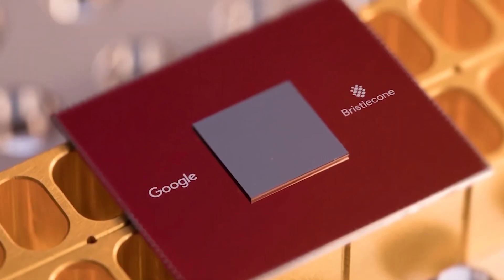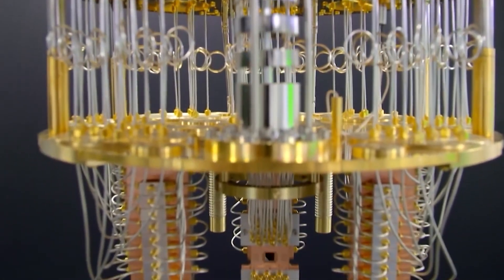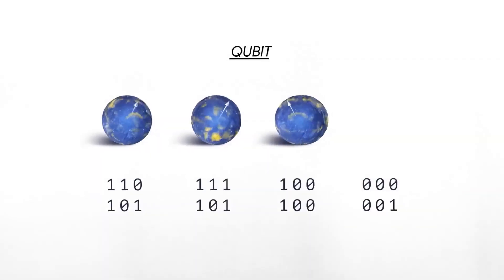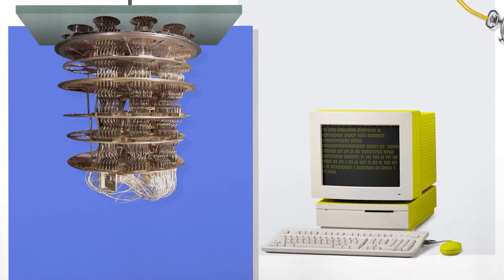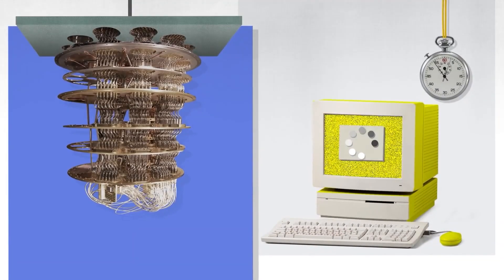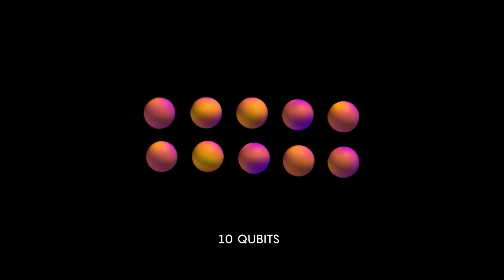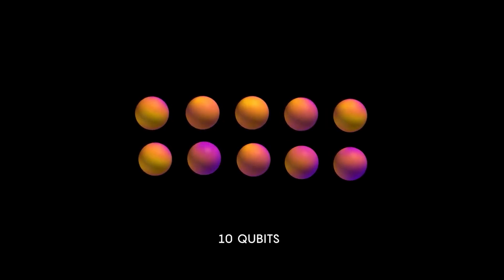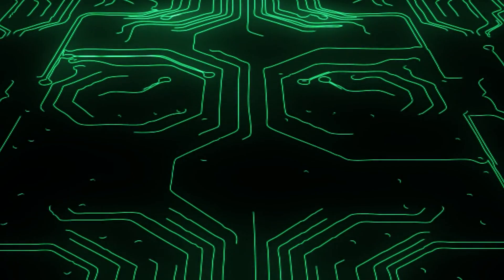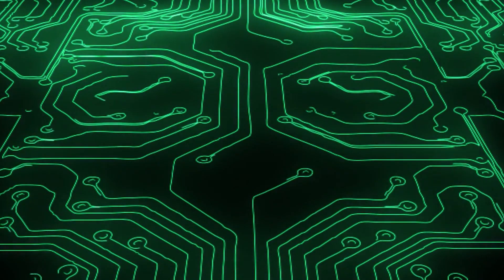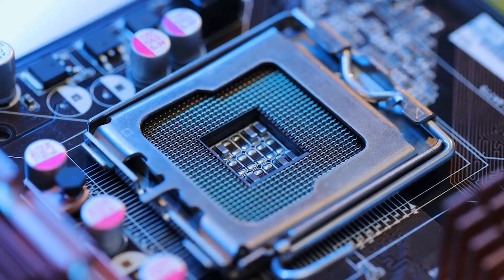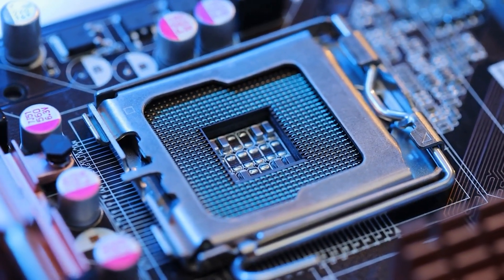The architecture of Google's quantum computer is a marvel in itself. It's composed of an array of superconducting qubits, which are extremely delicate and require ultra-cold temperatures to operate. These qubits are interconnected and manipulated using precisely timed microwave pulses. The orchestration of these pulses allows the qubits to perform complex computations.